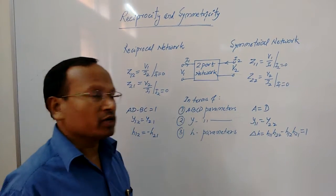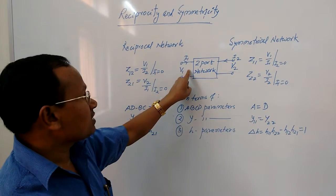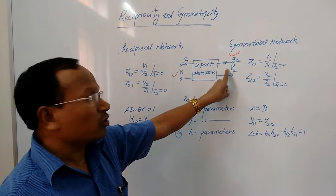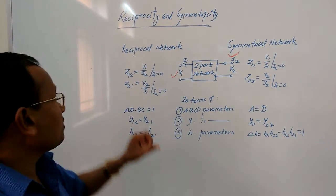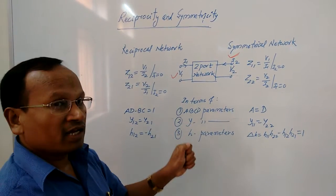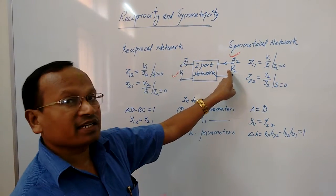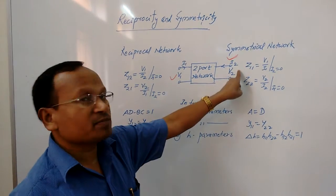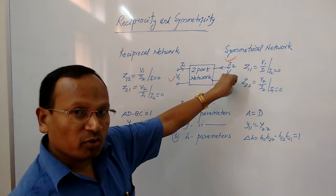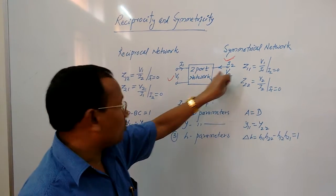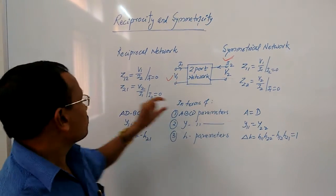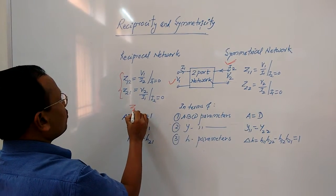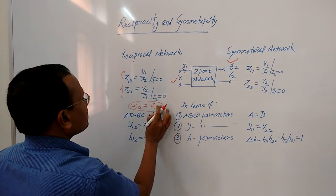And Z21 is V2 upon I1 with I2 equal to 0. Here V1 is the excitation at the input and I2 is the response at the output. If the network is reciprocal and we apply excitation V2 at the second port, the response is I1 at the first port. In a reciprocal network, the excitation-to-response ratio always remains the same. So the condition is Z12 equal to Z21.